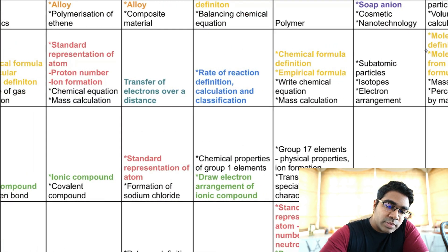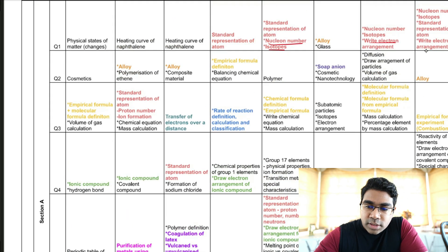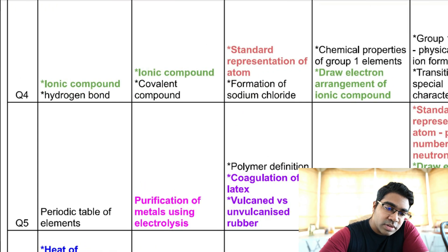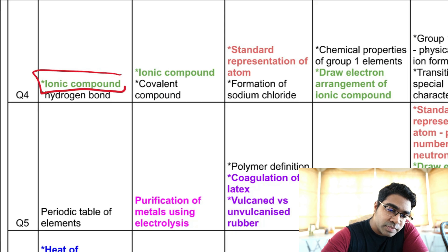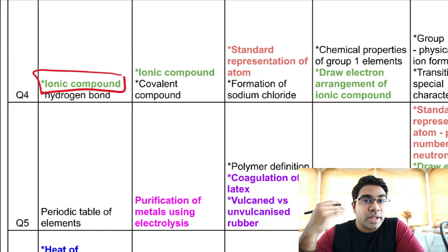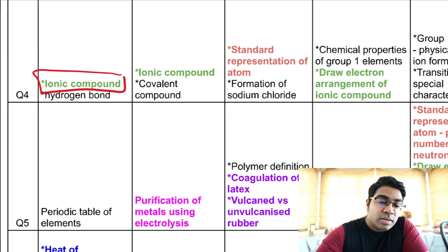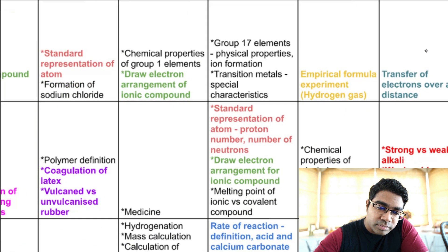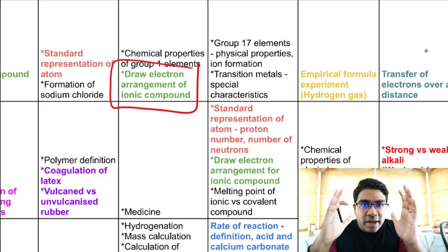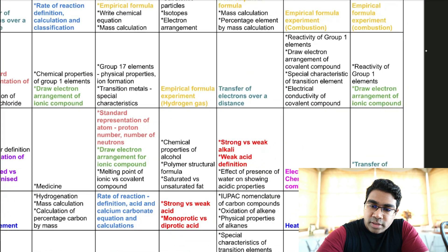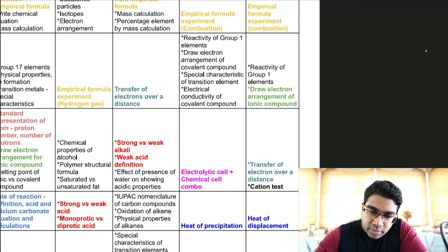Another recurring topic mixed between Section A and B is ionic compounds — they seem to be focused on ionic compounds this year. In Section A, it's pretty standard: draw the electron arrangement of the ionic compound that is formed. You can see draw electron arrangement of ionic compound appearing multiple times. They did ask covalent compound in two papers, but the focus seems to be more on ionic compounds.